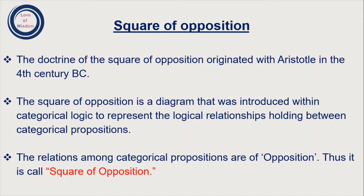The doctrine of square of opposition originated with Aristotle, who was a Greek philosopher, and he is also famous for traditional logic. The square of opposition is a diagram that was introduced within categorical logic to represent the logical relationships holding between categorical propositions.